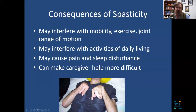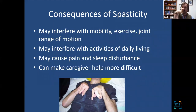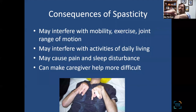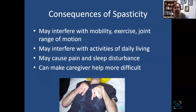Bad consequences of spasticity: a person with severe flexor spasticity in the upper extremities may have fingers held in a flexed position, wrists bent down, elbows flexed — obviously not conducive to using the arm. This impairs mobility, activities of daily living, and range of motion, and can be painful. Spasms at their worst at night can also interfere with sleep and make caregiver help more difficult. Too much extensor tone in the legs can cause the legs to scissor or cross, making intermittent self-catheterization and personal hygiene very difficult.